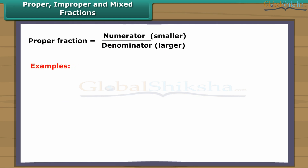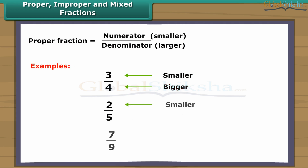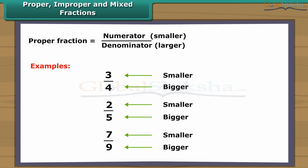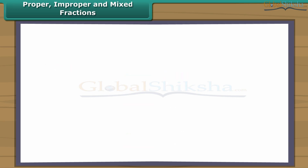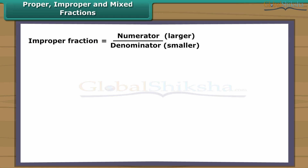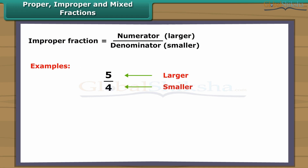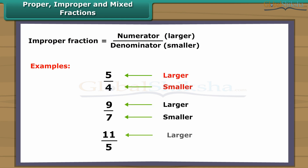For example, three-fourths, two-fifths, and seven-ninths are proper fractions. In an improper fraction, the numerator is greater than the denominator. Five-fourths, nine-sevenths, and eleven-fifths are a few examples of improper fractions.